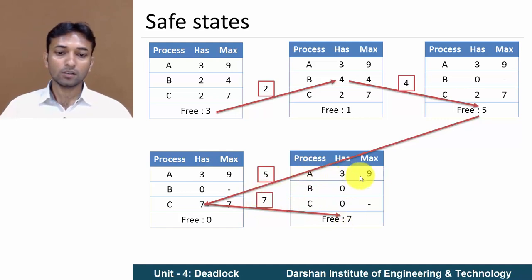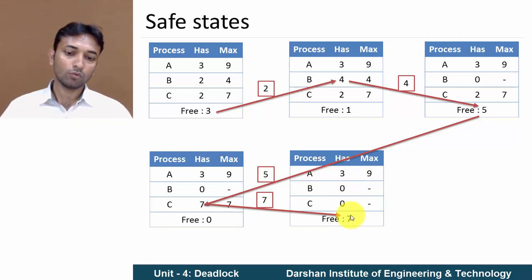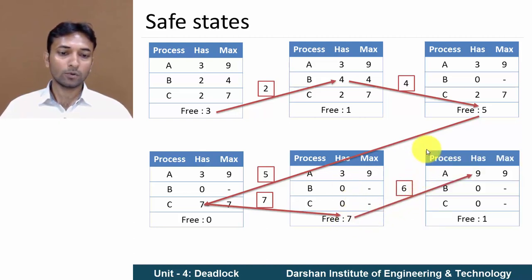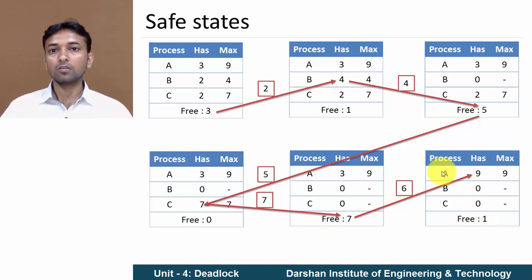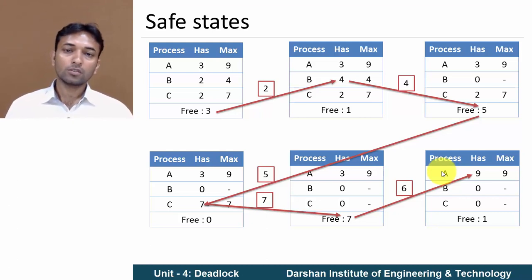Now the last process is A, which requires 6 resources, and 7 resources are available. So we allocate 6 resources to process A, giving it 9 total. After allocation, 7 minus 6 equals 1 resource still free. All processes complete one by one in the sequence B→C→A. So this state is known as safe state.